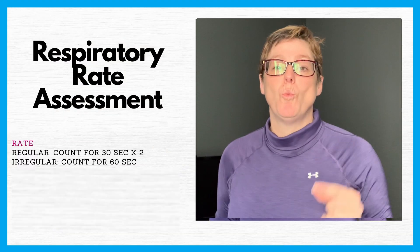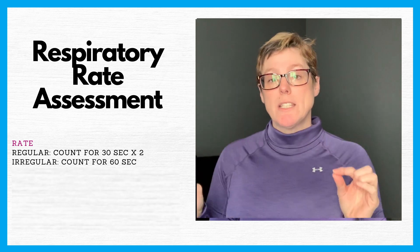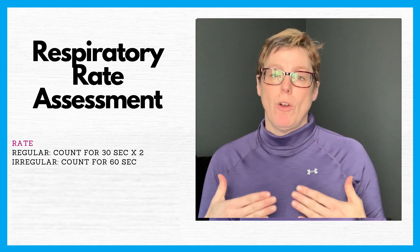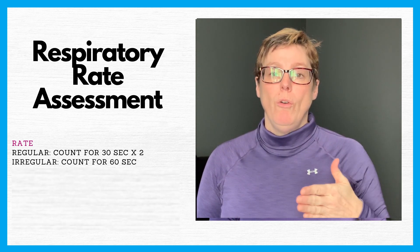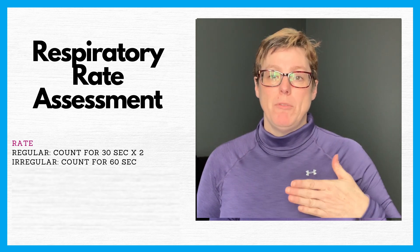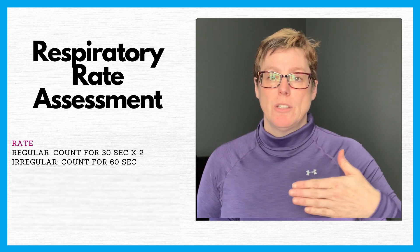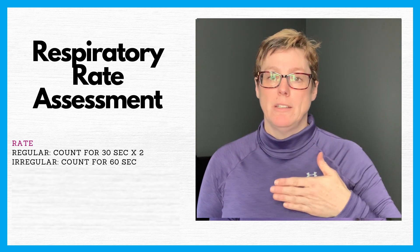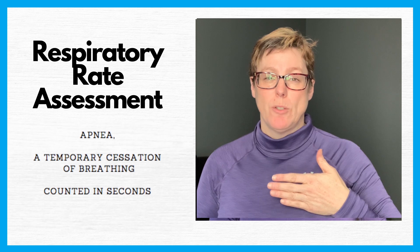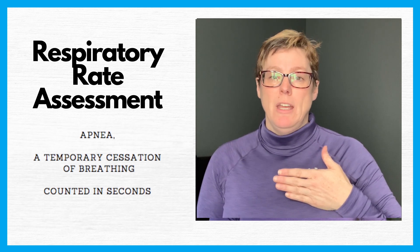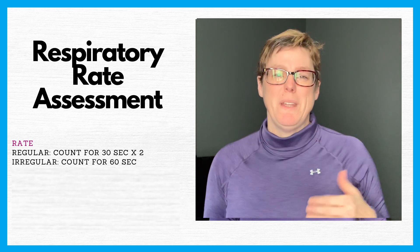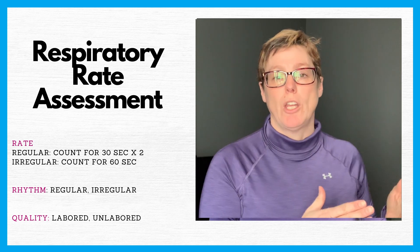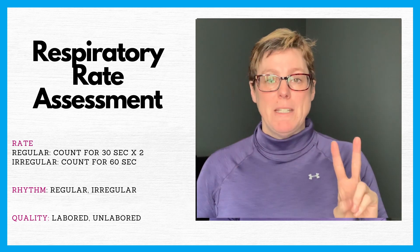The respiratory rate is one part of your respiratory system assessment. When looking at the rate, we're also looking to see if it is a regular rhythm with a predictable pattern, or an irregular rhythm — maybe fast, fast, fast, slow, with absent periods of apnea where there is no breathing. You want to count those seconds, and then all of a sudden there's a big gasp, then fast, fast, slow. We want to identify the difference between regular and irregular.